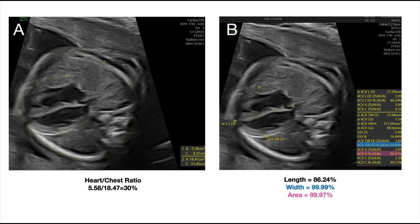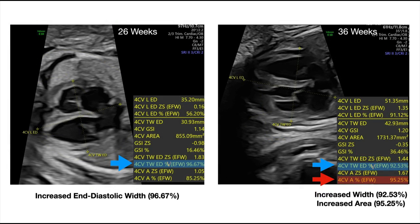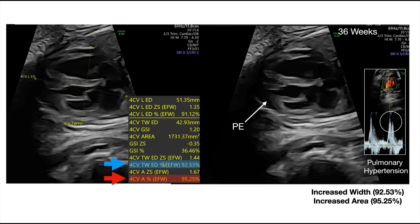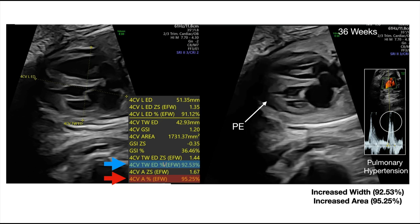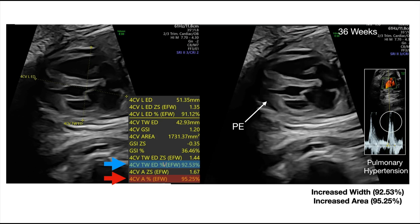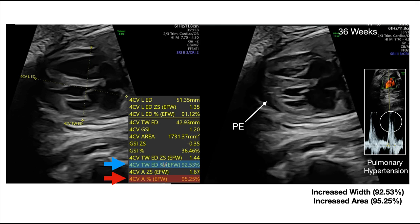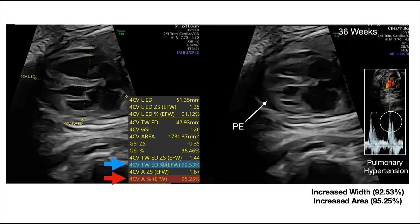Figure A demonstrates a heart-to-chest ratio equal to 30%, which is normal. Figure B demonstrates measurement of the heart width and area R greater than the 99th percentile. These images are from the same fetus at 26 and 36 weeks of gestation. At 26 weeks, the end-diastolic width of the heart was increased with a Z-score of 1.83 and corresponding centile of 96.67, while the area was at the 85th centile. At 36 weeks, the width was still above the 90th centile with the area at the 95th centile. The fetus had a pericardial effusion associated with increased pulmonary artery resistance, manifest by notching at the top of the pulmonary artery Doppler waveform, a classic finding reported in newborns and adults with pulmonary hypertension. Notching of the main pulmonary artery is commonly seen in fetuses with growth restriction.